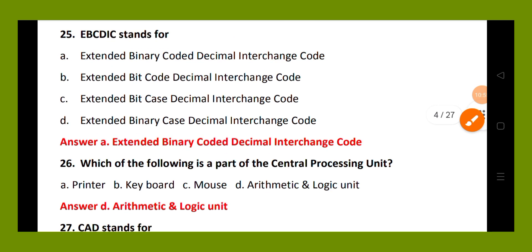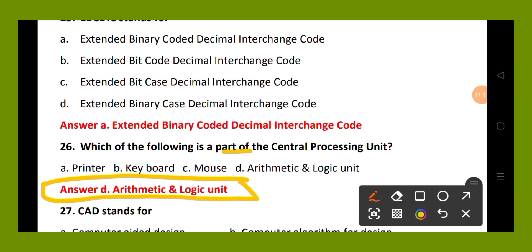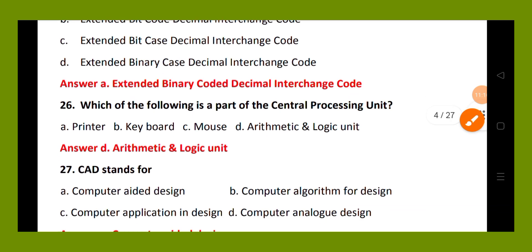Question number 26. Which of the following is a part of the central processing unit? Option A, printer; option B, keyboard; option C, mouse; option D, arithmetic and logic unit. The right answer is option D. The arithmetic and logic unit is a part of the central processing unit.